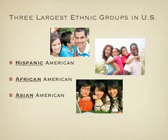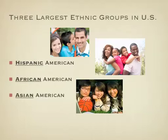Looking at the United States in particular, the three largest ethnic groups besides European are Hispanic American, African American, and Asian American. There are other groups as well, as we've talked about with migration, but these are the three largest groups in concentration in the United States.